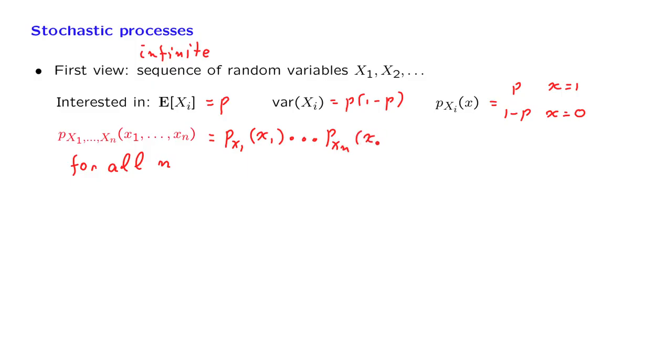And we already know what the marginals are. So we do indeed have a specification of the joint PMF, and we have that for all values of n. Of course, for more complicated stochastic processes, this calculation might be somewhat more difficult.